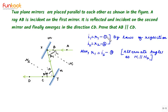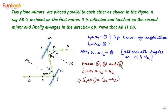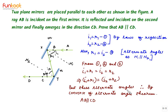To summarize the formal proof: Statement 1 — I1 equals R1, by the law of reflection. Statement 2 — I2 equals R2, by the law of reflection. Statement 3 — R1 equals I2, because these are alternate angles since N1 is parallel to N2. From statements 1, 2, and 3 we have I1 equals R1 equals I2 equals R2. This implies I1 plus R1 equals I2 plus R2. But these are alternate angles, therefore by the converse of the alternate angle theorem, AB is parallel to CD. This is what we had to prove.